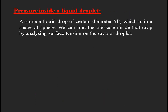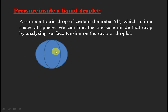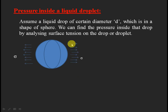First, consider a liquid droplet of diameter d — its shape is automatically a sphere. We can find the pressure inside the drop by analyzing the surface tension acting on its external surface. This surface tension causes a tensile force on the external surface, which is maximum at the middle edge cross-section of the sphere, and it causes deformation of the drop.